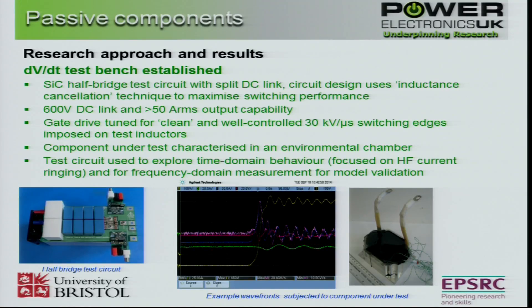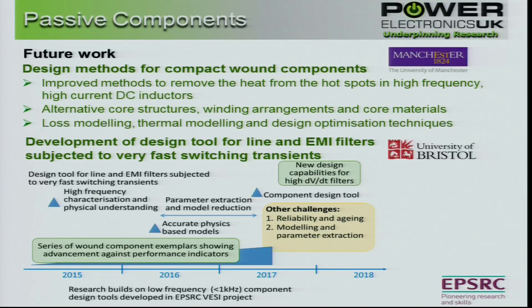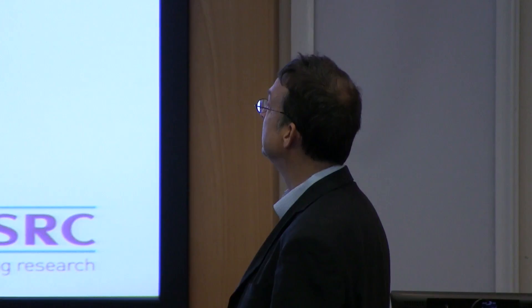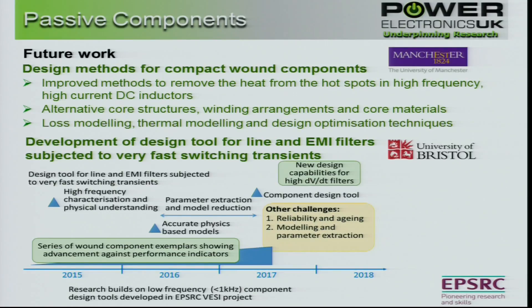We've got a test circuit where we're able to subject test components to very well-defined dV/dt edges at reasonable power levels, and then we're using that to explore the time domain behaviour and the physical interpretation of the design of such devices. Moving forward, we're really looking at developing a suite of design tools to feed into the cross-themed design tool and method theme which couples into work going on in converter design. It's looking at new core structures, new materials, loss modelling, thermal modelling, coupled design, and putting together a road map to understand the design rules for components subjected to high dV/dt.